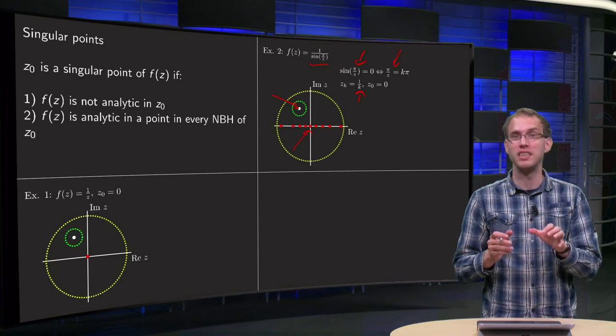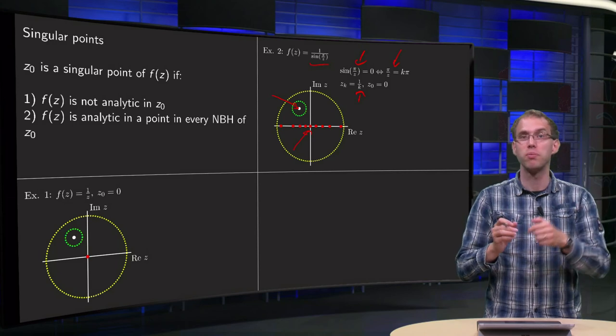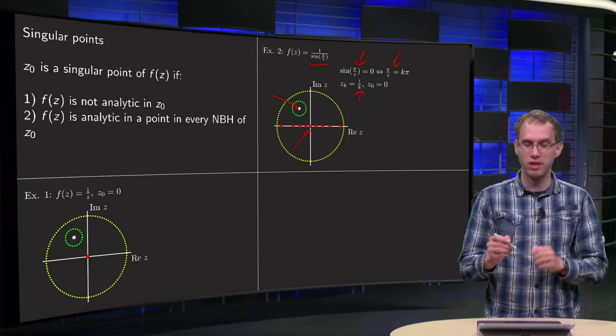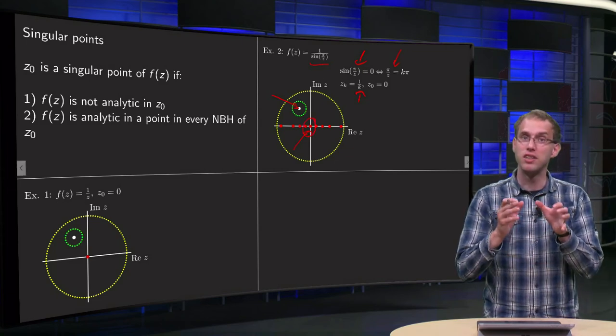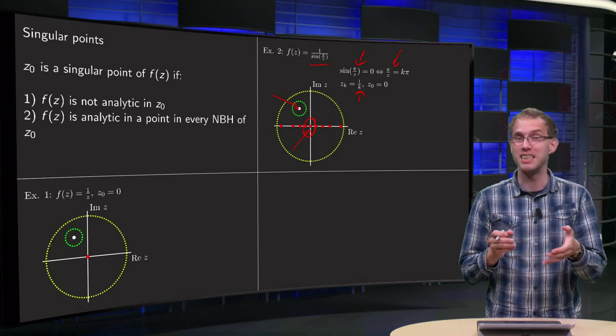Notice the formulation. So first you draw a neighborhood, then you have to find another point in the neighborhood such that f is analytic. You do not need to find a neighborhood of 0 such that in this neighborhood of 0, in the deleted neighborhood, f is analytic, because that is also not the case in this case.